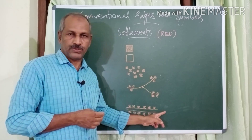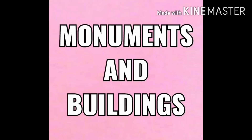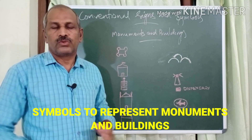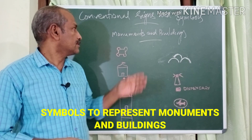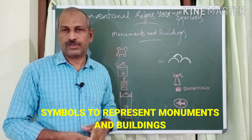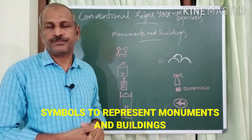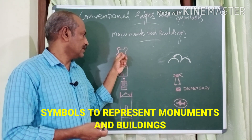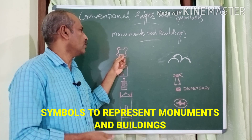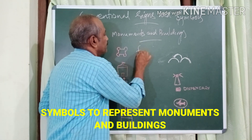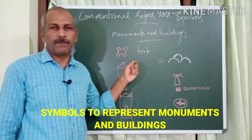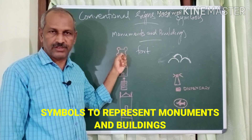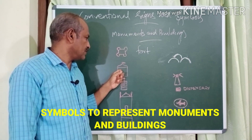Now let's see how monuments and buildings are represented in the topographic map. The first symbol, in red color, represents a fort or fortress.